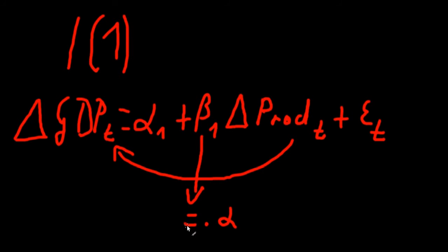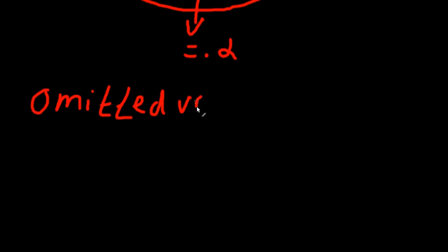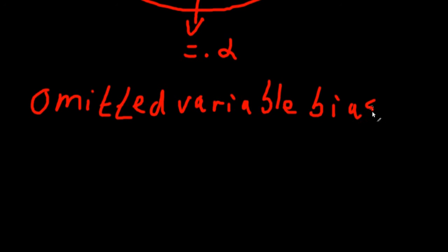Can we raise some concerns about this model? The obvious concern is omitted variable bias. There are almost certainly other very important variables that influence the change in GDP. Leaving these out of our regression equation will lead to serious bias — the estimate of beta one might be completely wrong in terms of the actual underlying relationship. The solution is to include those omitted variables.